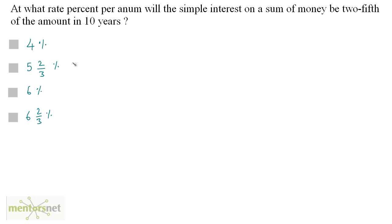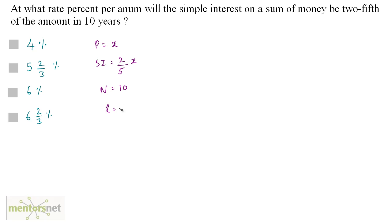At what rate percent per annum will the simple interest on a sum of money be 2/5 of the amount in 10 years? The simple interest is 2/5 of the principal amount. Let the principal be x rupees, so the simple interest is 2/5 of x. The number of years is 10 and we need to find the rate R.